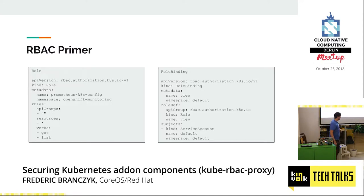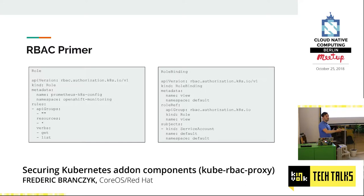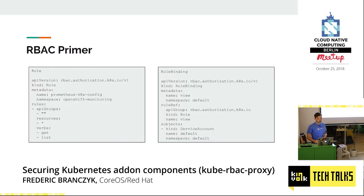I actually didn't properly update that name — it was supposed to be the view role. Then there's a role binding that actually binds the role to an entity. In this case, I bind it to a service account. A service account is really, as the name says, an account that is supposed to be used by a machine entity. There are also users and groups, but in this case I just used a service account.